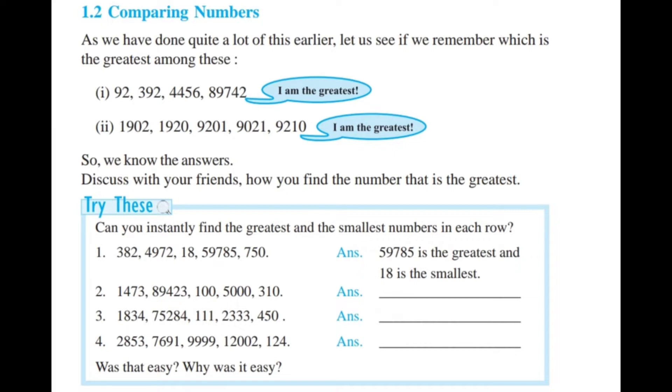Second one: 1902, 1920, 9201, 9021 and 9210. 9210 is the greatest. Let us see some more examples on comparing numbers.